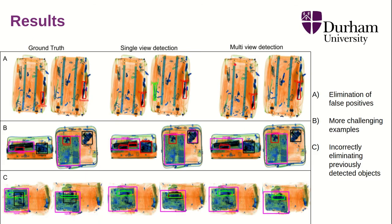A qualitative assessment shows how our method deals with false positives. Some false positives are eliminated because they are not near an epipolar line in the first view. In more challenging examples, two firearms may be detected in one view but only one in the second view — our method handles this and eliminates the false positives. In the most challenging cases, the method sometimes eliminates objects that were true detections, because they were not found in the second view.